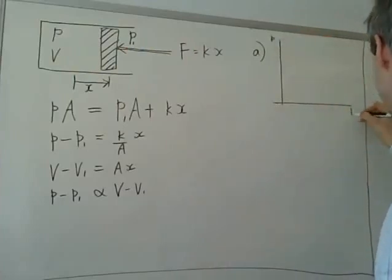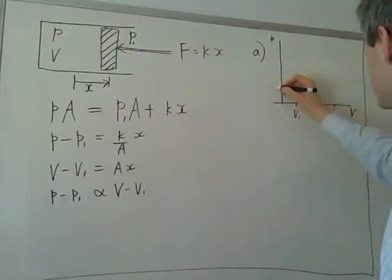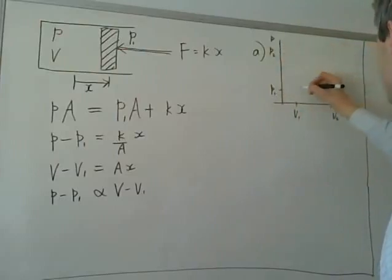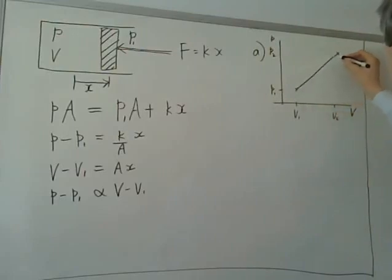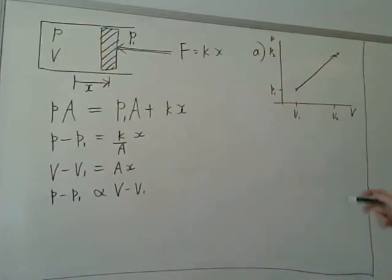But it will look like this. Here's, this axis is P, this is V, initial V1, V2, P1, P2. This is the path, perhaps, the reversible path that our state follows, or the thermodynamic state follows. And the work done is the area under this curve.